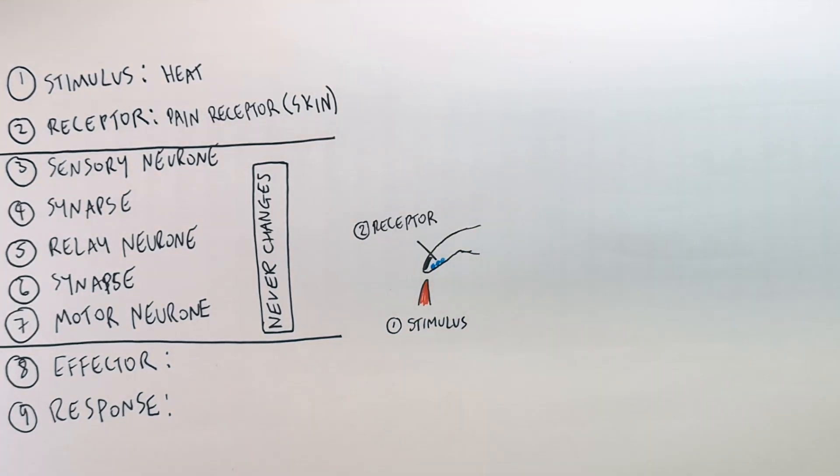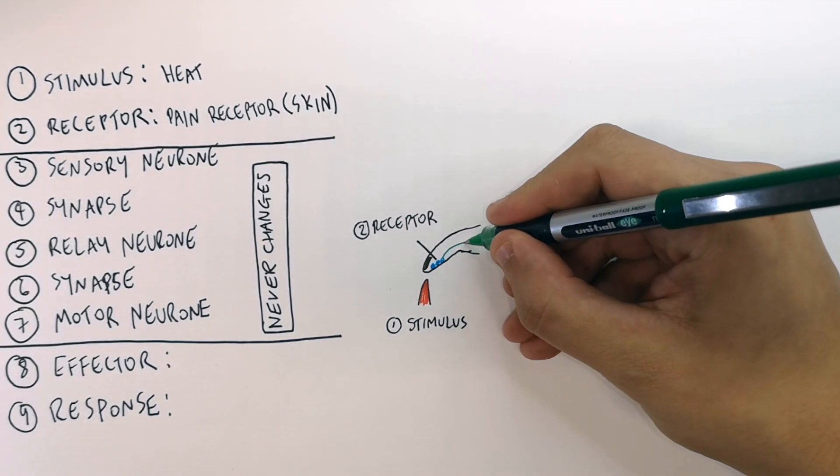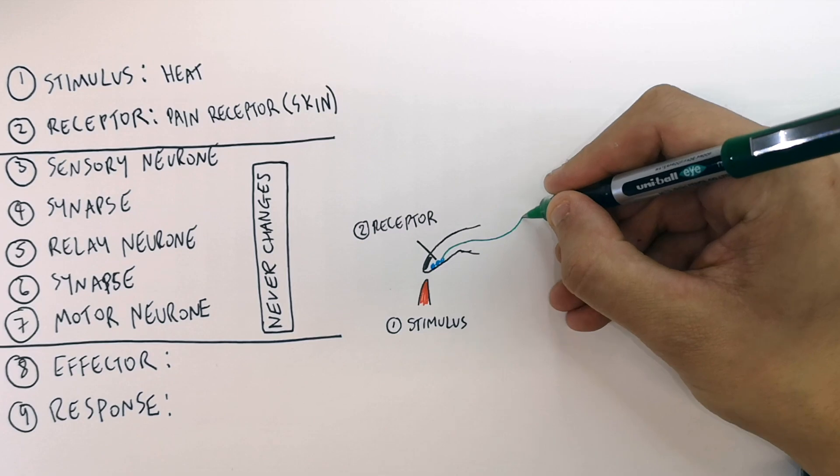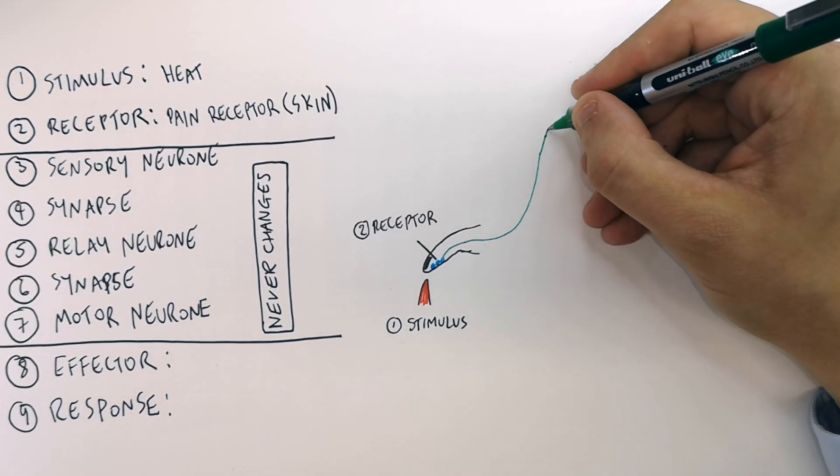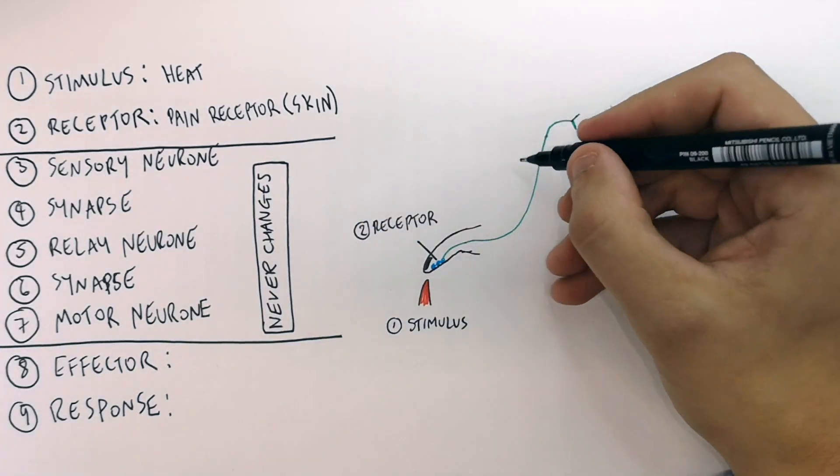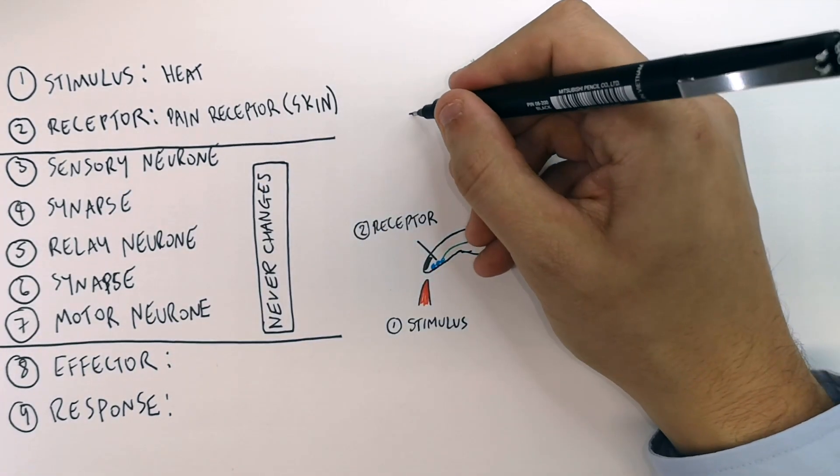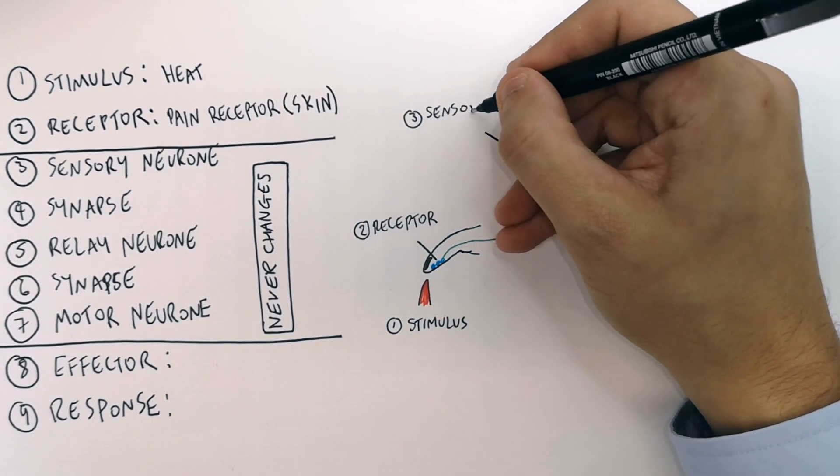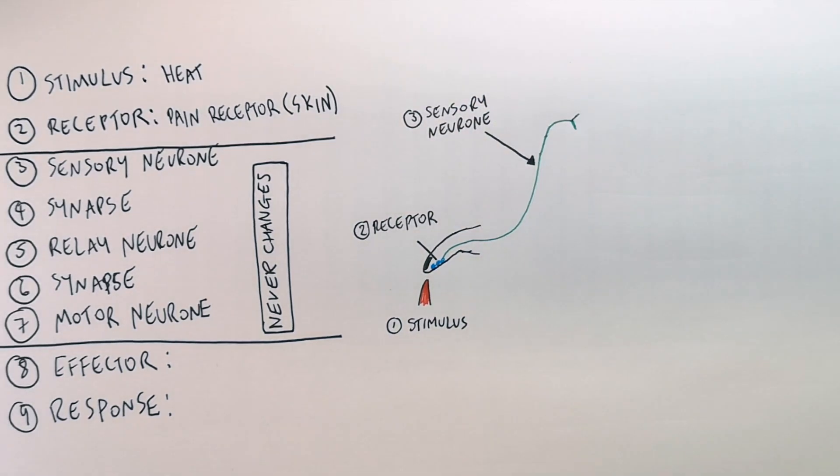Now there are other receptors and other stimuli which we're gonna go through in another video. So now we're drawing the sensory neuron. The sensory neuron is the neuron that connects to the receptor, and it takes the electrical impulse from the receptor to the central nervous system. The sensory neuron is what we're labeling here. It is the first neuron in the reflex arc.